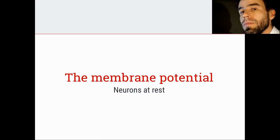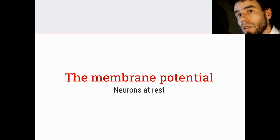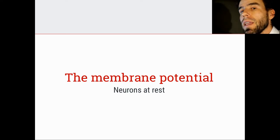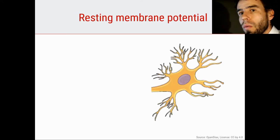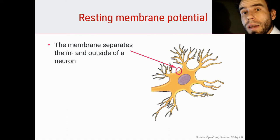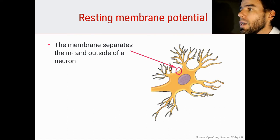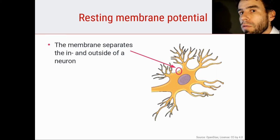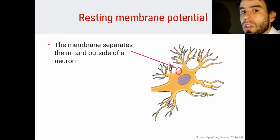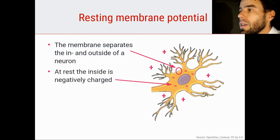The membrane potential is an important concept to know about if you are thinking about neural communication. What is the membrane potential? Well, what is a membrane? The membrane is something that separates the inside and the outside of a cell — it's the wall or skin of a cell. And because a neuron is a cell, a neuron also has a membrane.